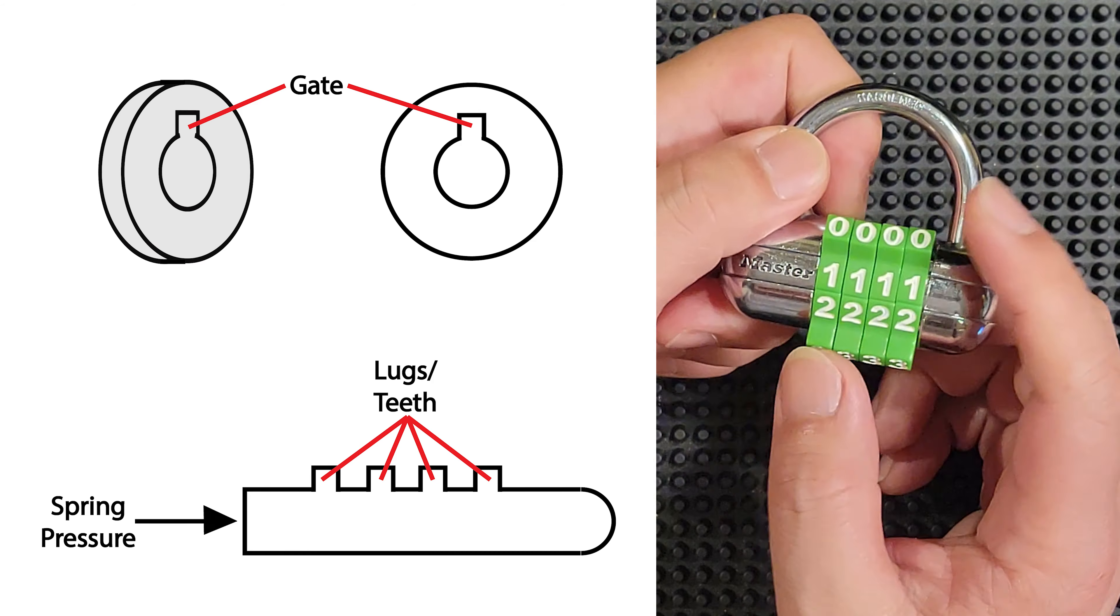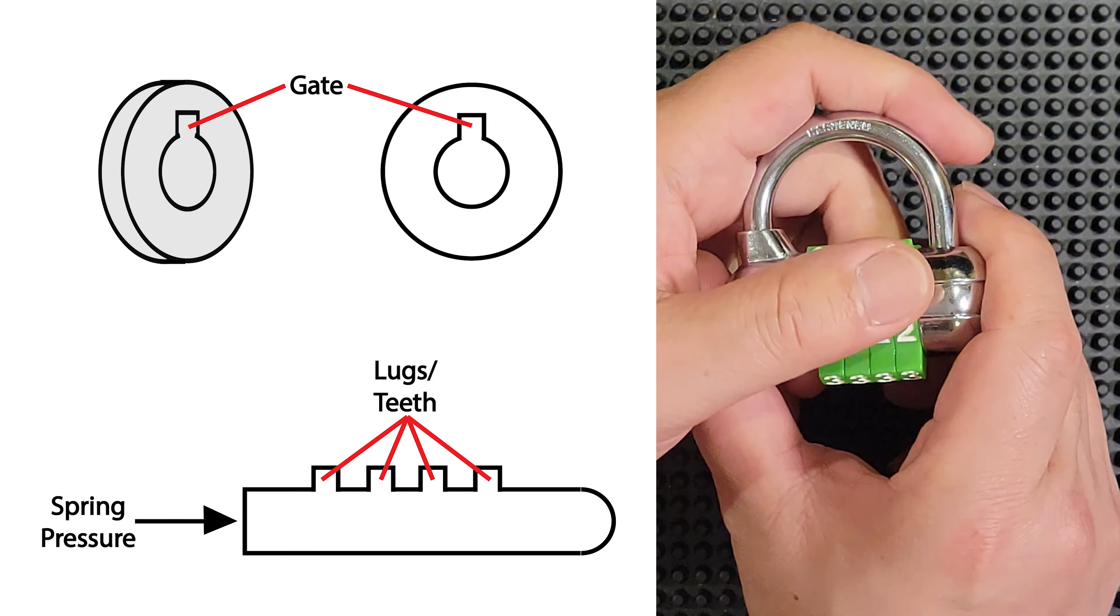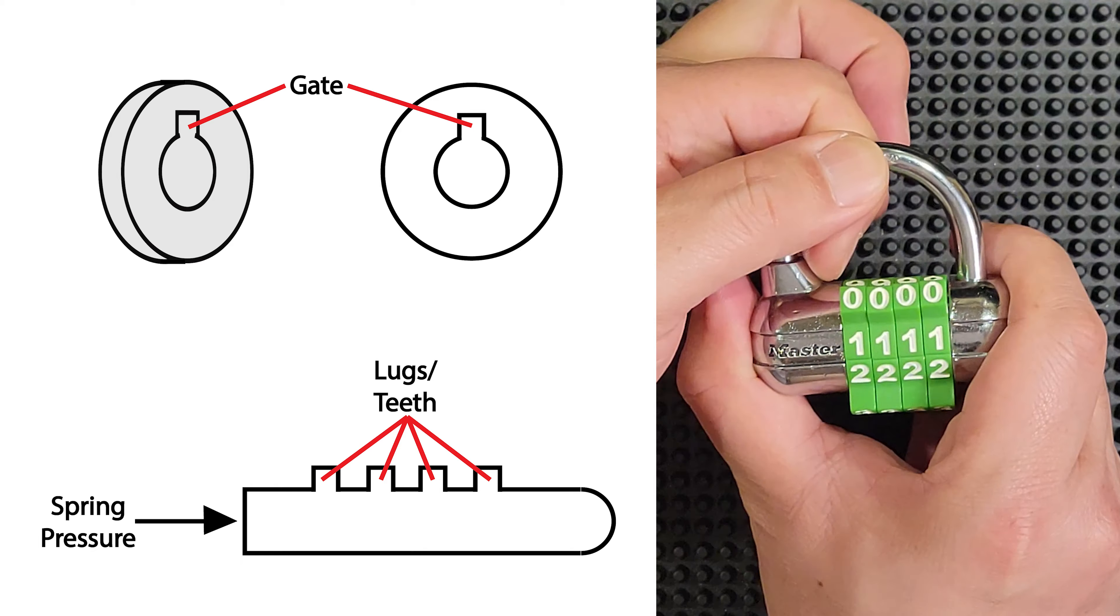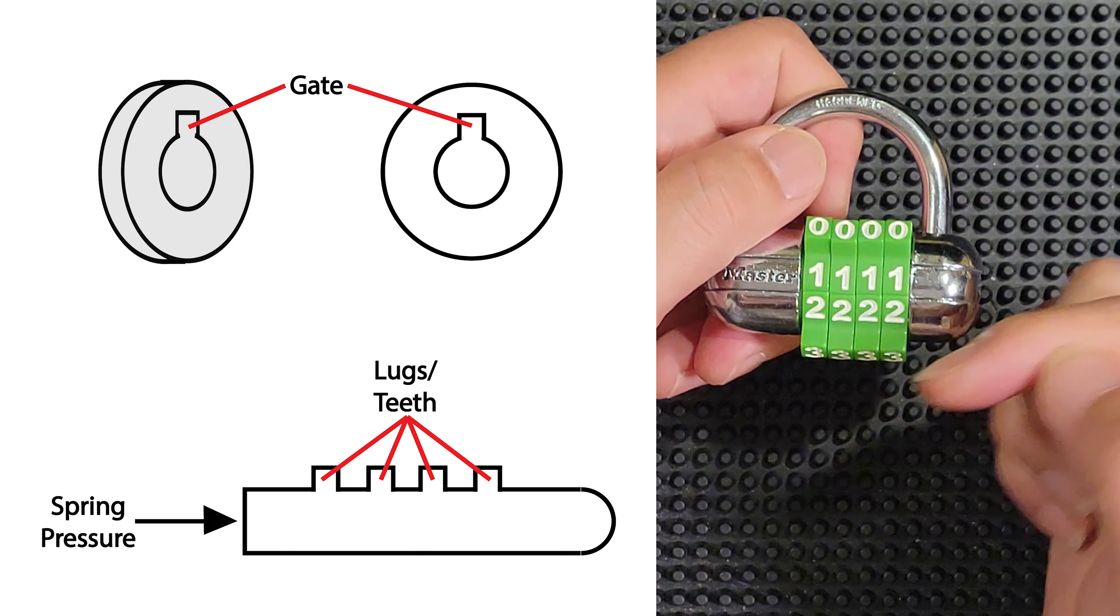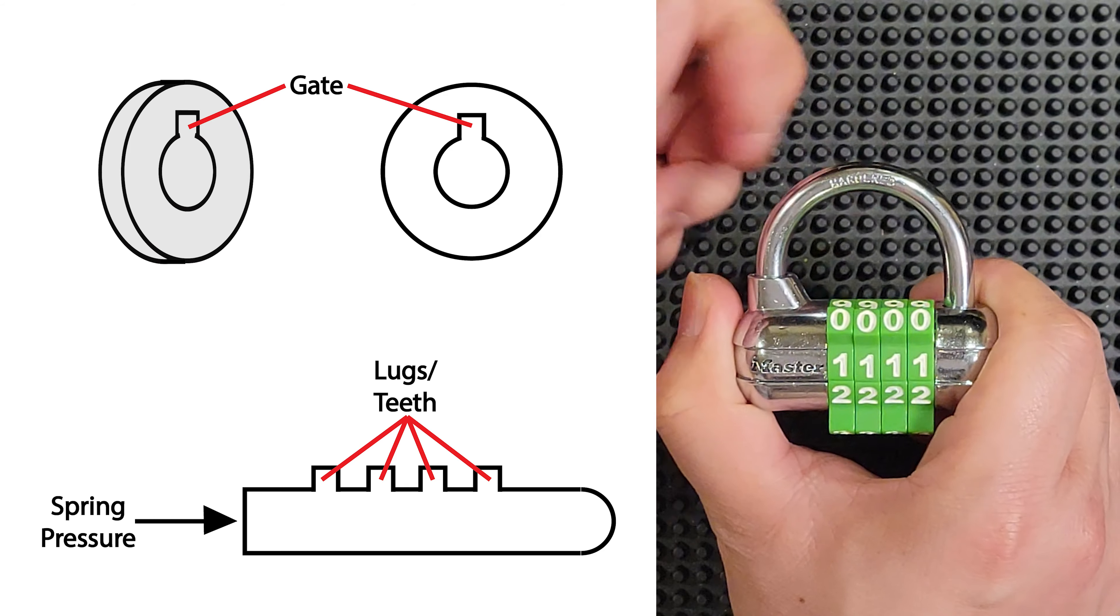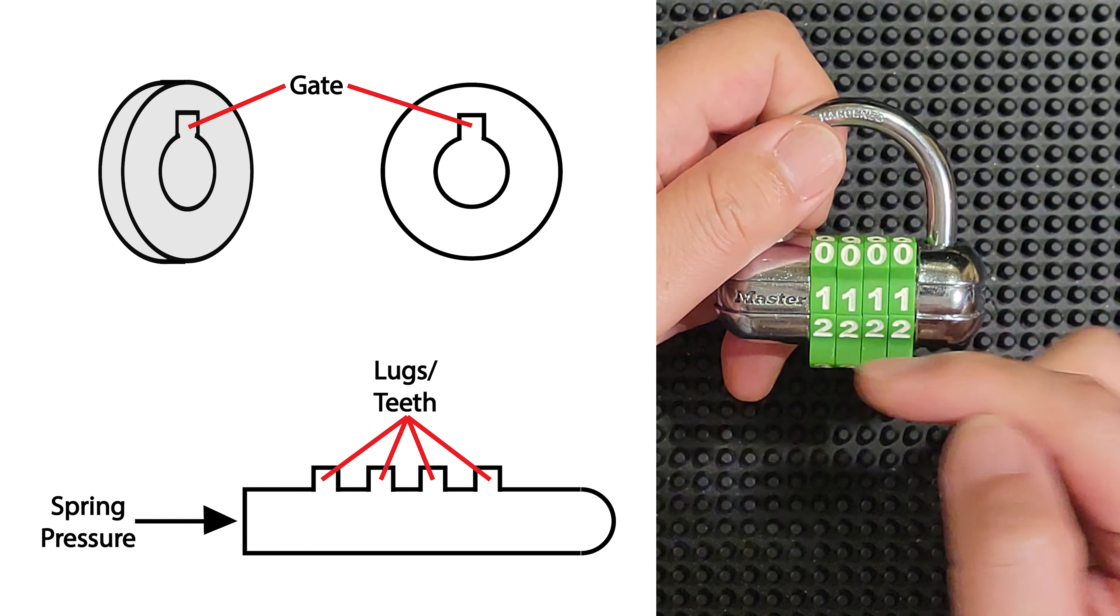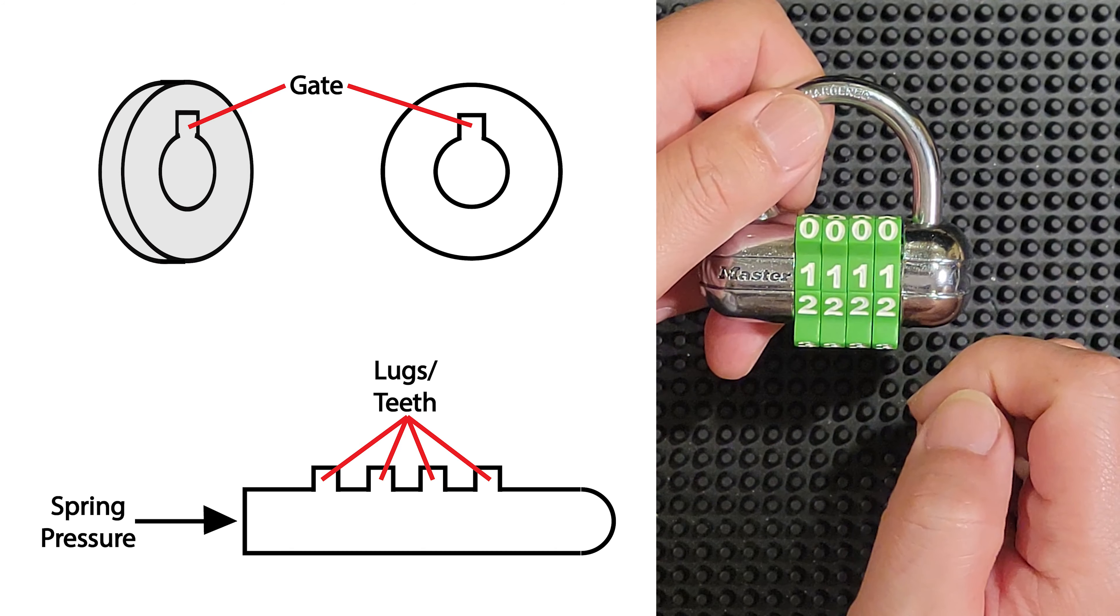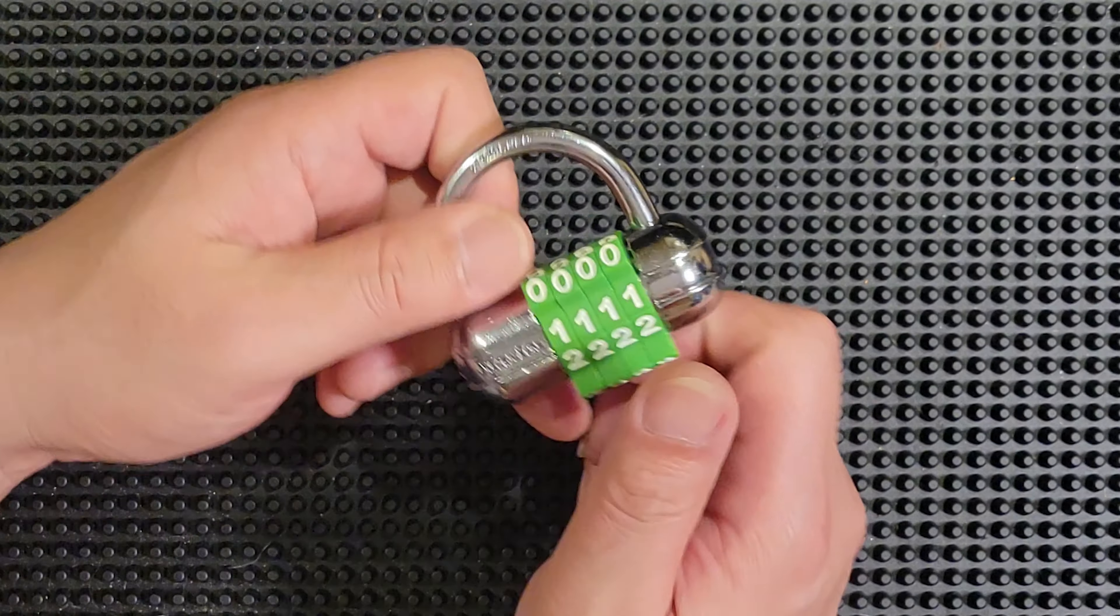And then, when you are not in the correct combination, when you try to pull on that shackle, the lugs hit the solid portions of the dials, and the rod cannot slide into the unlock position.